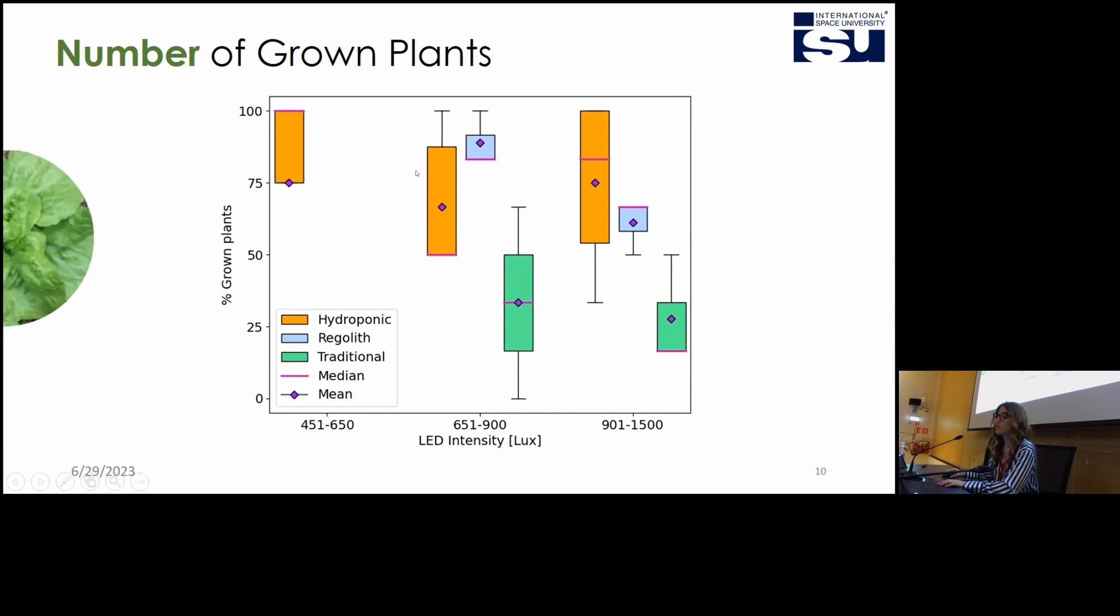In the case of the low range, unfortunately I had just the hydroponic system data, but for the medium and high range, I had the possibility to see that in general, the traditional pots have a lower performance with respect to the others.